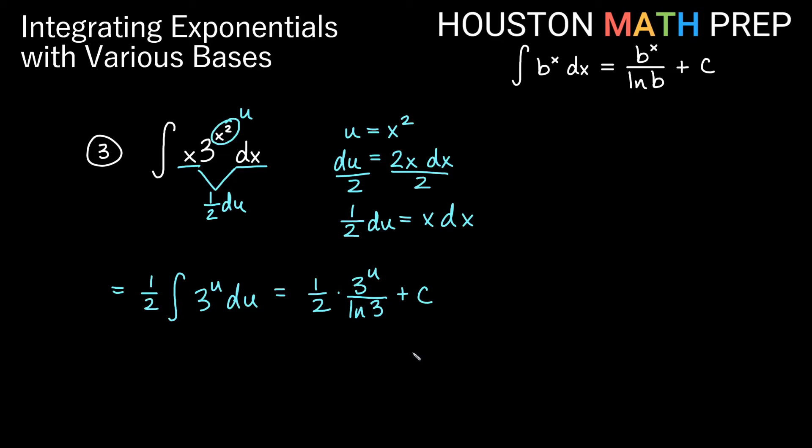We're going to combine a couple things. Notice I have a 2 and an ln 3. Those are both just constants. Let's put those together. So we have 1 over 2 ln 3, and then 3 to the u. Let's replace the u. Remember u was x squared, so getting back in terms of x, that'll be 3 to the x squared plus our constant.